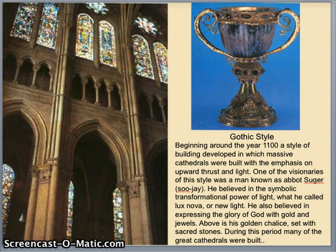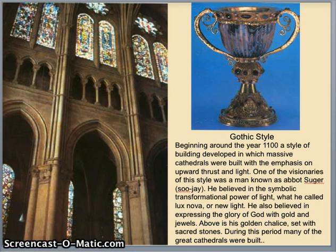Beginning around the year 1100, a style of building developed in which massive cathedrals were built with emphasis on upward thrust and light. One of the main visionaries of this style was a man known as Abbot Suger. Abbot Suger believed in the symbolic transformational power of light, which he called Lux Nova, or new light. He also believed in expressing the glory of God with gold and jewels. He believed that God was glory — wealth beyond measure — so he wanted his abbots and those holding the most power in his church to have fine jewels and gold.